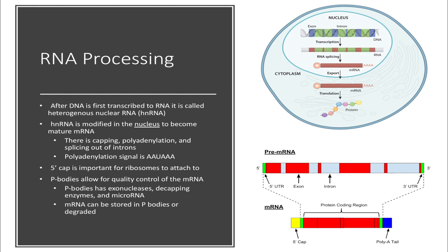Let's go back and summarize the super important facts. RNA processing occurs in the nucleus. When DNA is first transcribed, it's called heterogeneous nuclear RNA. After splicing, polyadenylation, and capping, you can call the heterogeneous nuclear RNA mRNA. And that all occurs in the nucleus.